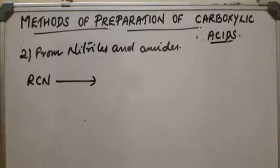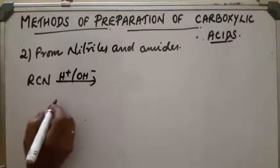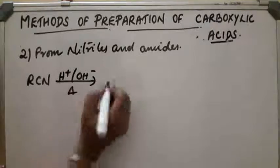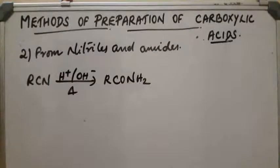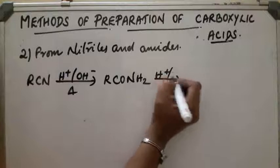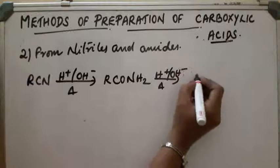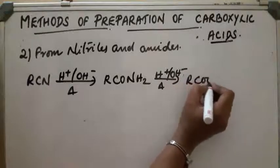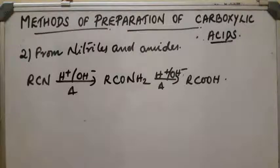Nitriles on heating in presence of acids or bases as catalyst first get converted into the corresponding amide RCONH2. Again on heating with acid or base as catalyst, it gets converted into the corresponding acid. If mild reagents are used, the reaction stops at the amide stage itself.